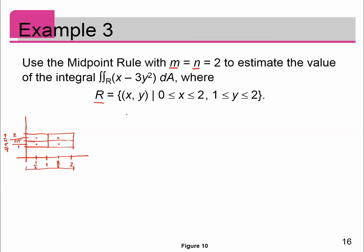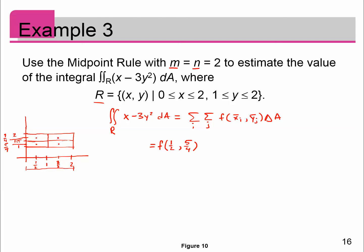The double integral over R of x minus 3y² dA is equal to the double sum over i and j, evaluating f at each midpoint (x̄ᵢ, ȳⱼ) times ΔA. I'm going to do this for all four rectangles. The first point is (1/2, 5/4), and the area of each rectangle is the same, so I'll just call it ΔA.